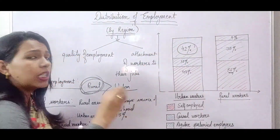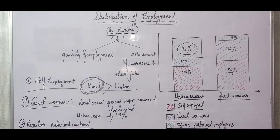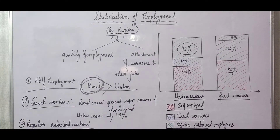In urban areas it is 42 percent; in rural areas it is 9 percent. There is a vast difference because in urban areas, people acquire proper qualification and pursue higher qualification. But rural people are not interested in or able to pursue higher levels of education. They do not have high levels of skill or literacy. That's why they are not able to take up jobs as regular salaried workers.